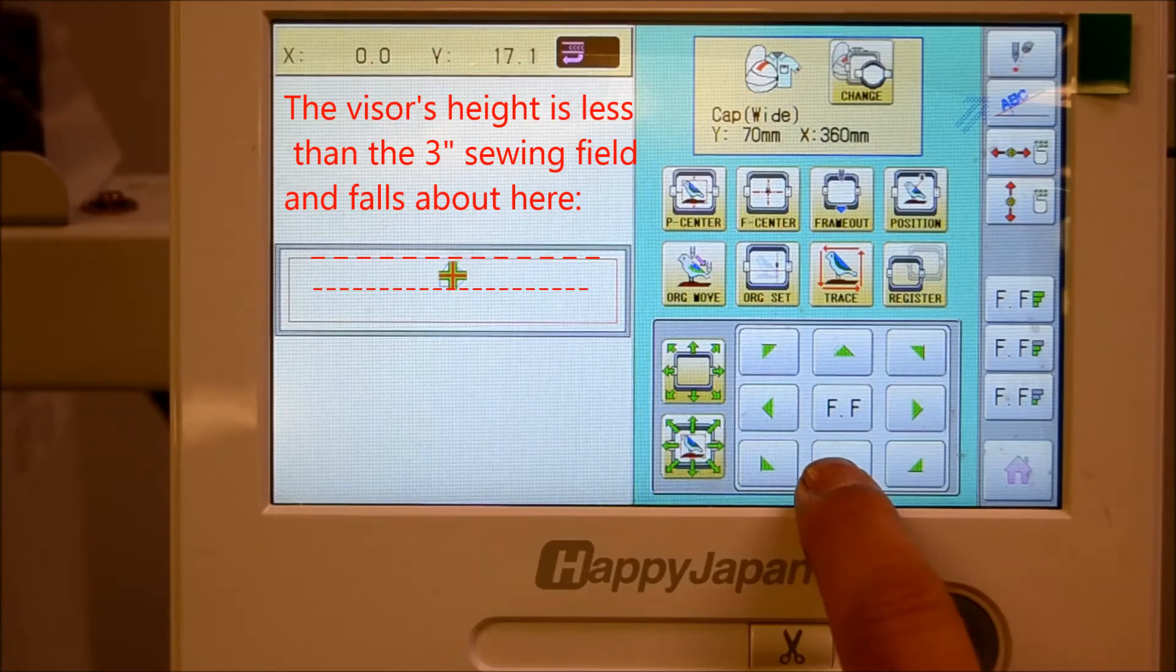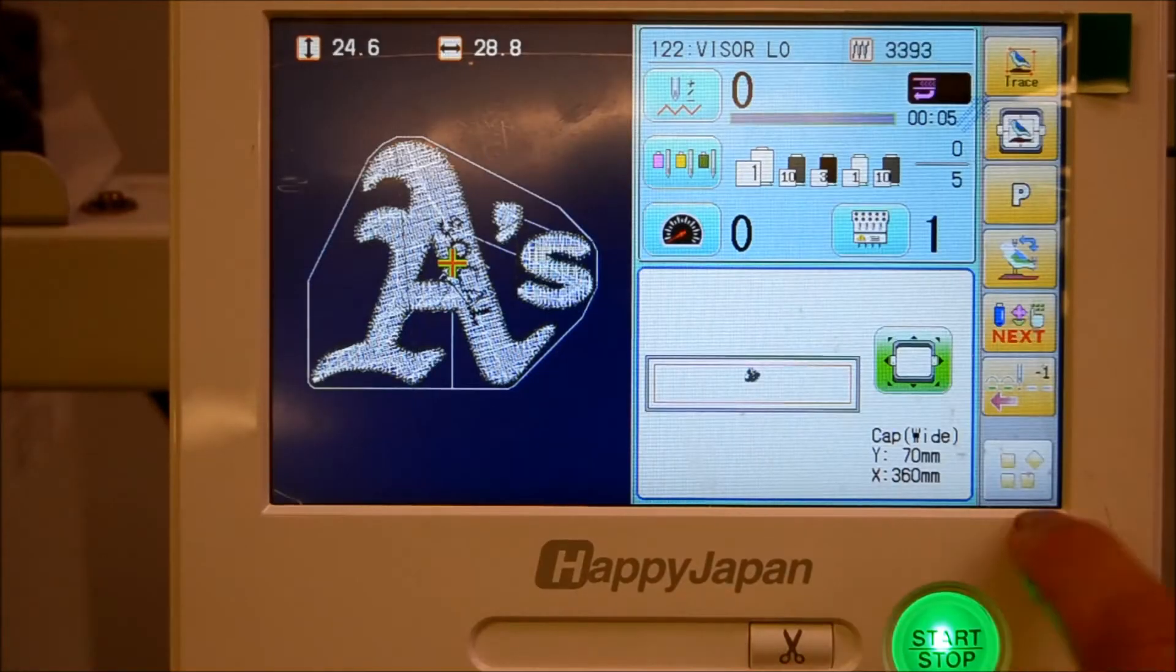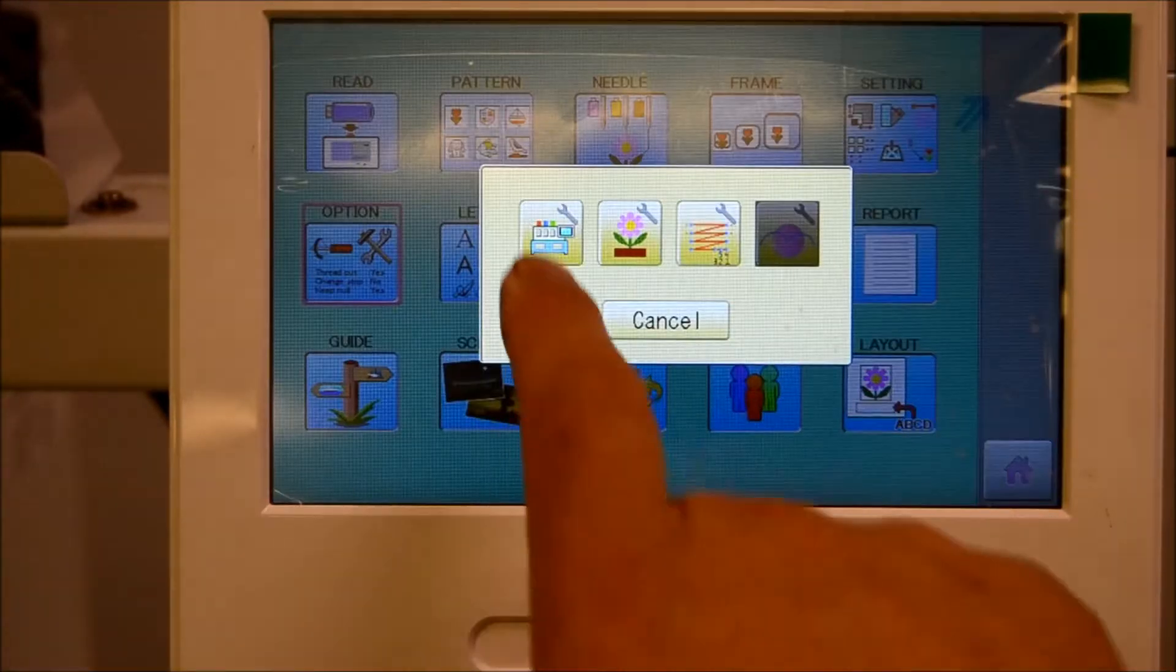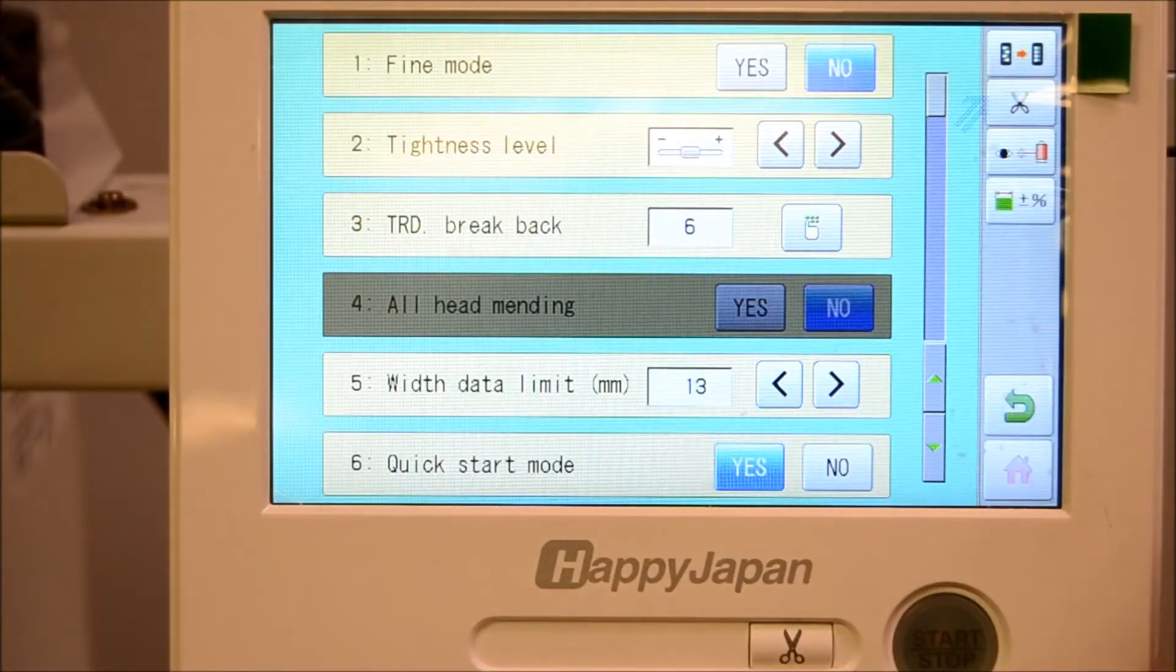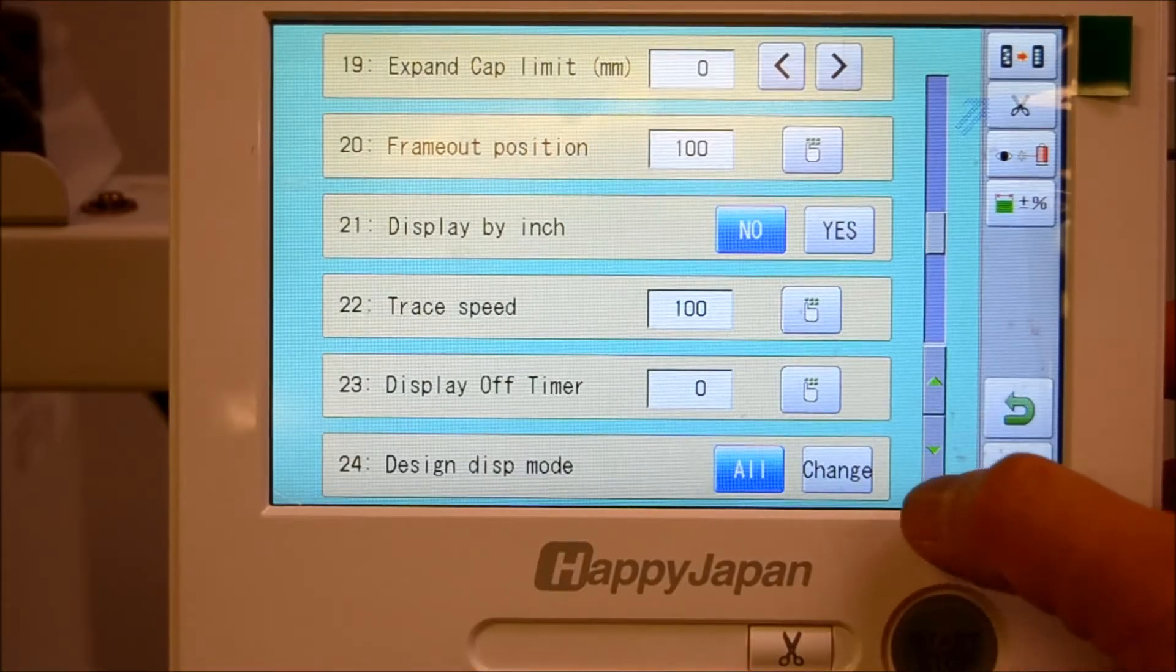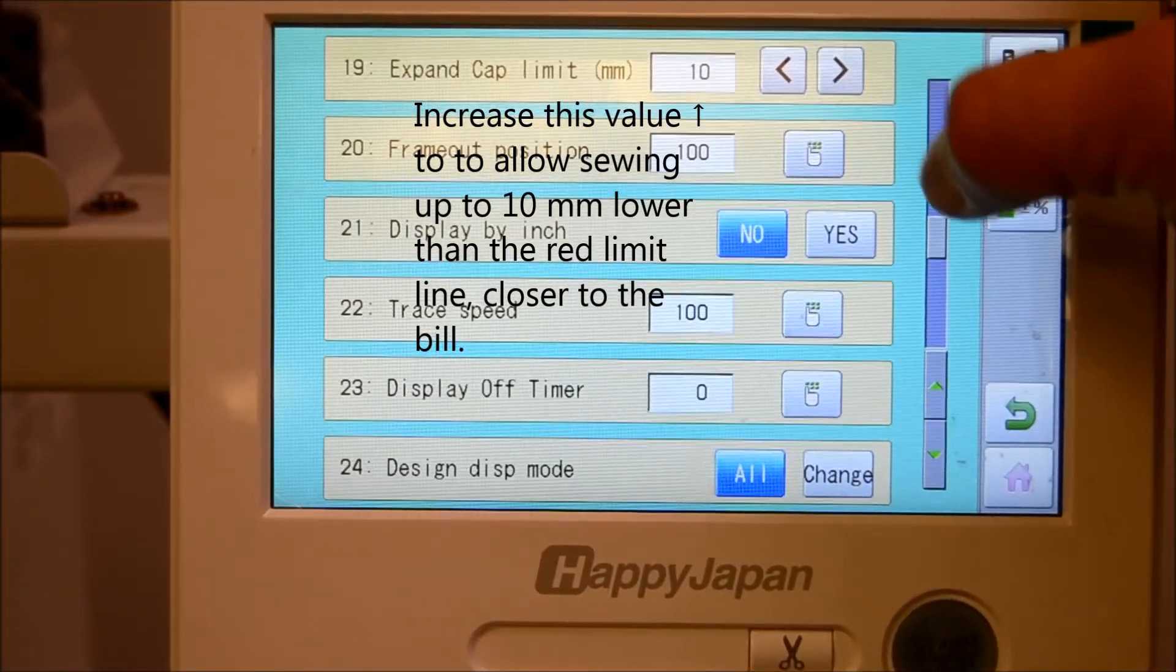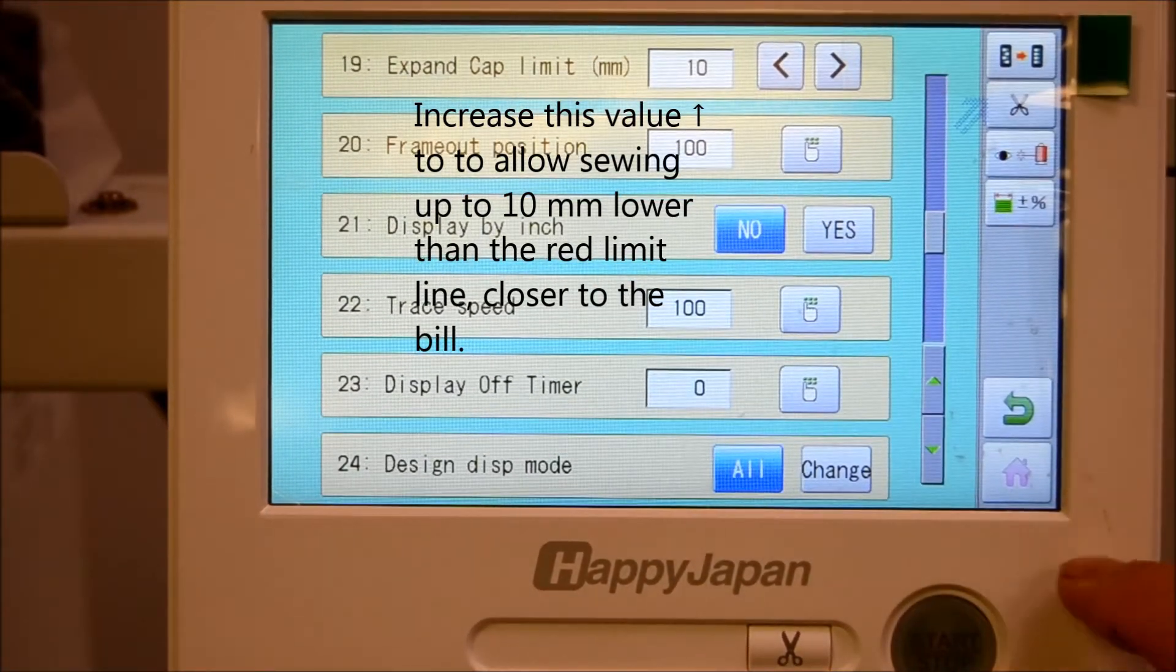So you can get that outline to touch the red safety line by going to the machine's main menu going to option and under the machine option scroll to expand cap limit and you can set a max value of 10 millimeters which means it lets you sew 10 millimeters beyond the red safety line below the limit.